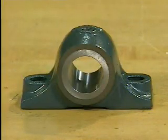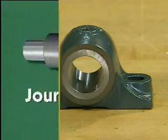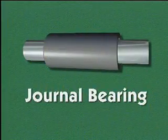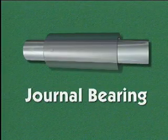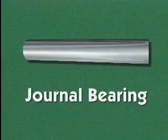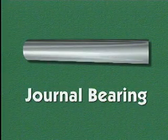Solid journal bearings can be more difficult to replace than other types of journal bearings. Frequently, they must be slipped on and off the end of the shaft, or the shaft must be removed through the bearing.